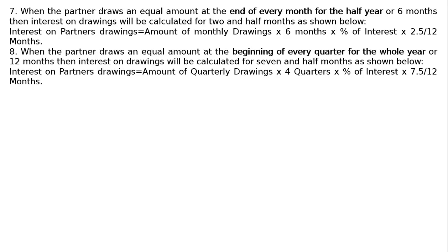The eighth rule: when the partner draws an equal amount at the beginning of every quarter for the whole year or 12 months, then interest on drawings will be calculated for 7 and half months. Interest on partner's drawings equals amount of quarterly drawings multiplied by 4 quarters multiplied by percentage of interest multiplied by 7.5 upon 12 months.